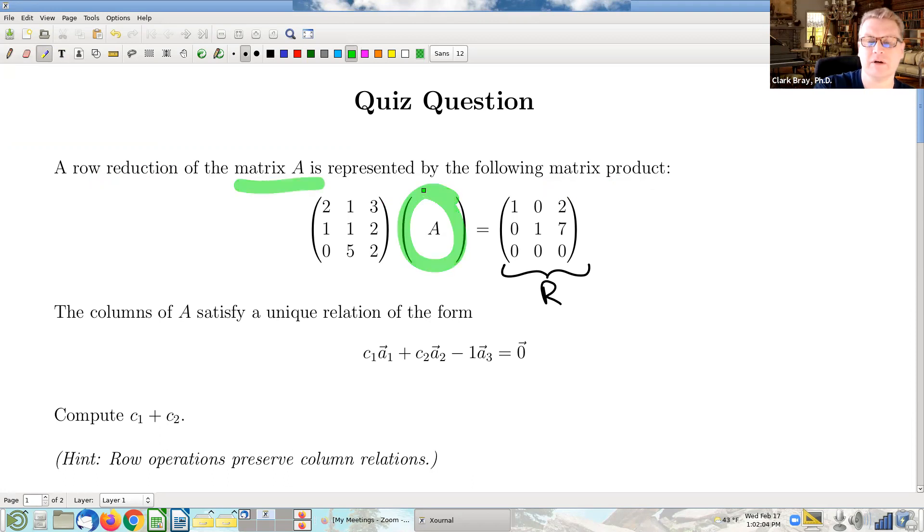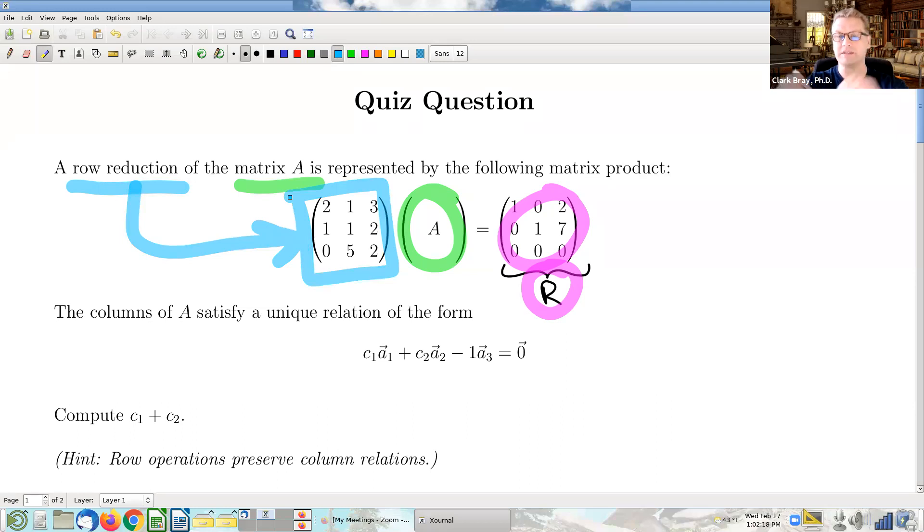The original matrix is reduced to its reduced row echelon form, which I'm going to call R, by way of a row reduction. And specifically, that means that this matrix here is representing the row reduction. So that's the first thing to realize about this quiz question is what that matrix is in blue. It represents the row reduction.